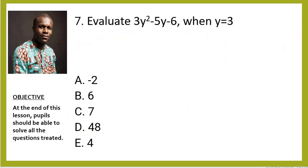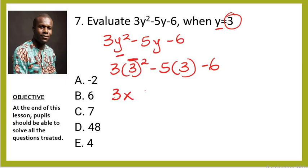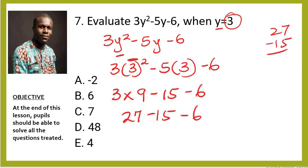Question seven: evaluate 3y² − 5y − 6 when y = 3. Substitute y with 3: 3(3²) − 5(3) − 6. That gives 3 × 9 − 15 − 6 = 27 − 15 − 6. 27 − 15 = 12, and 12 − 6 = 6. The right answer is B.